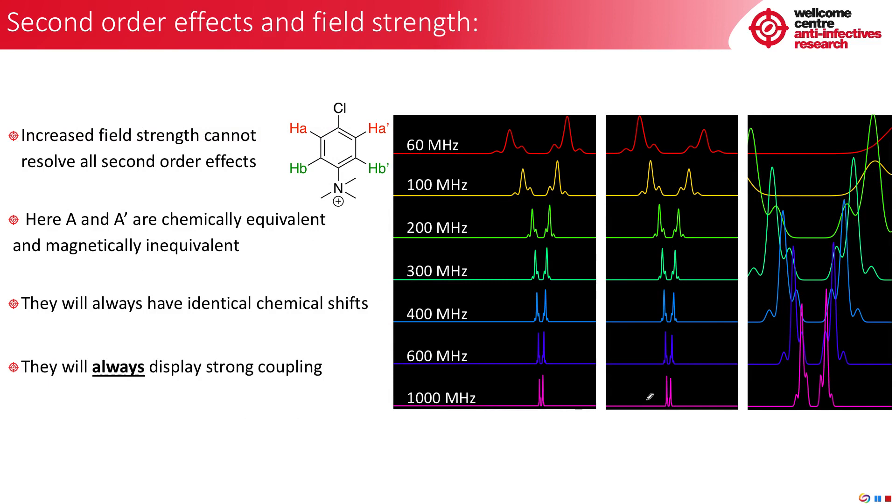But wait a minute. I told you that for A, A prime, B, B prime systems like the one I'm showing you, that they are chemically equivalent and magnetically inequivalent. This means that their chemical shifts are always the same. A and A prime are chemically equivalent, magnetically inequivalent. They always have identical chemical shifts. This means that they will always be both on top of each other and coupling. They will always display strong coupling and second order effects will result. And this is independent of the magnetic field strength.